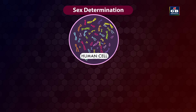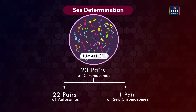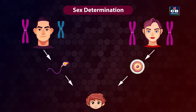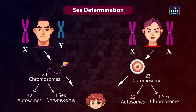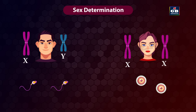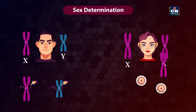Each human cell contains 23 pairs of chromosomes: 22 pairs are autosomes and one pair is sex chromosomes. Females have a pair of the same kind of sex chromosomes (XX), whereas males have a different pair (XY). Gametes are haploid with 23 chromosomes — 22 autosomes and one sex chromosome. In males, gametes are formed with either X or Y sex chromosome, so some sperm cells carry X and some carry Y. All female egg cells carry the X sex chromosome.